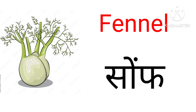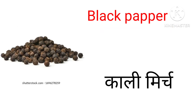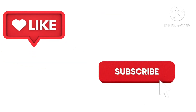Fennel means Fomp. Carom seed means Ajwain. Black pepper means Kali Mirch.